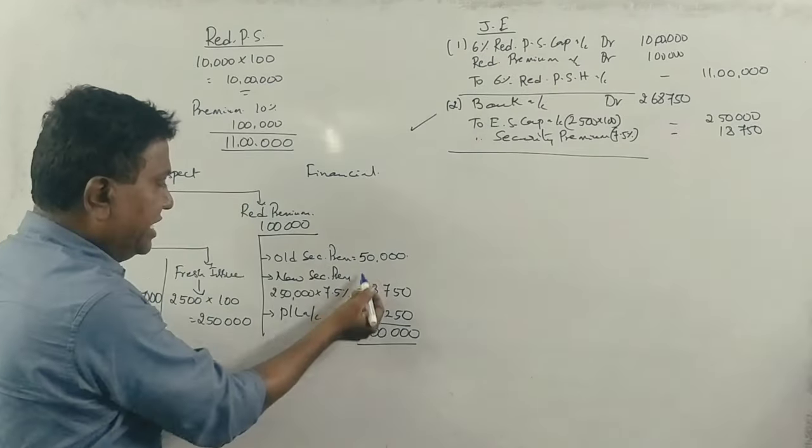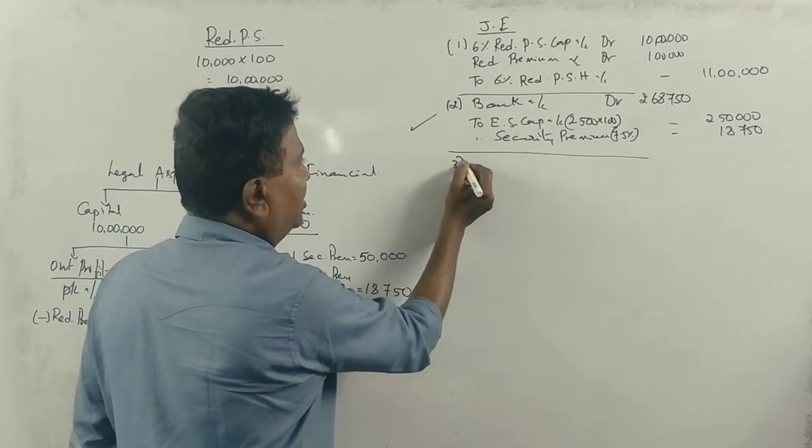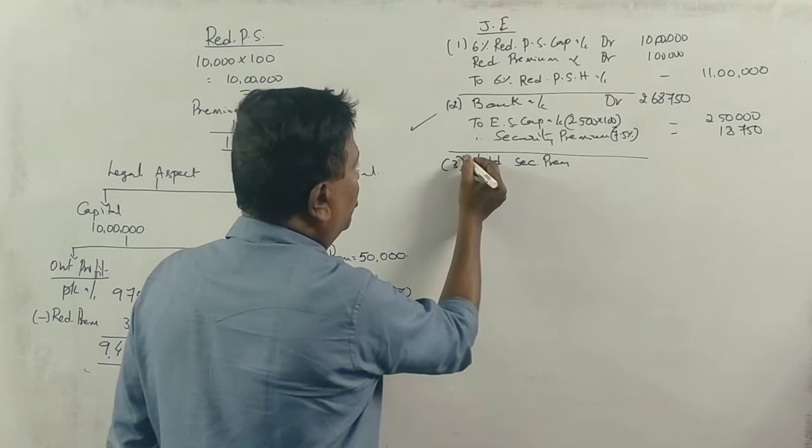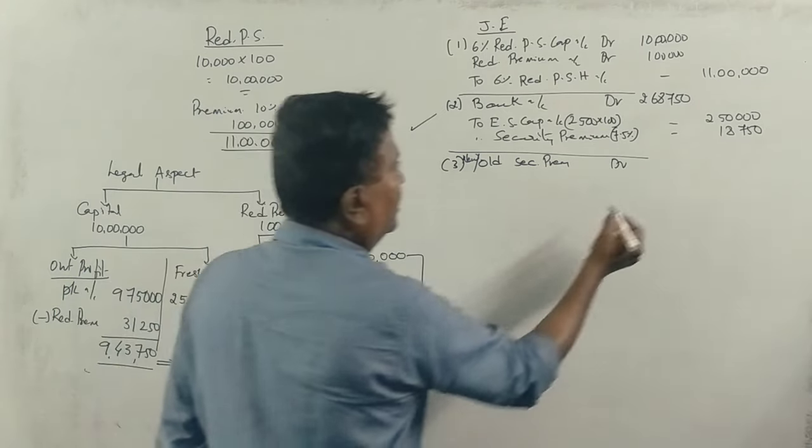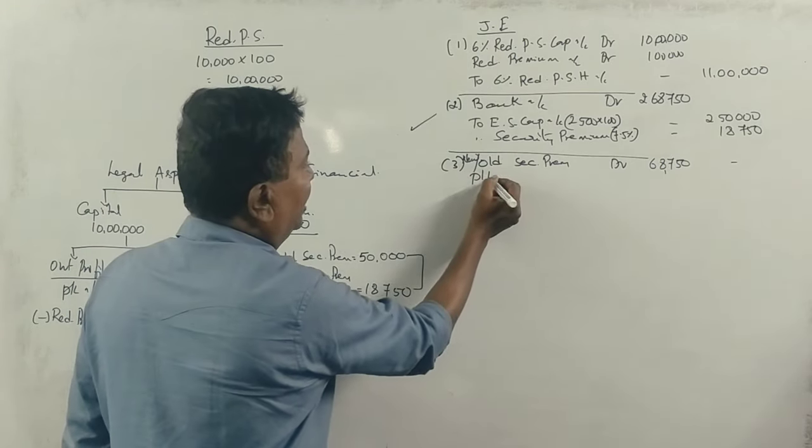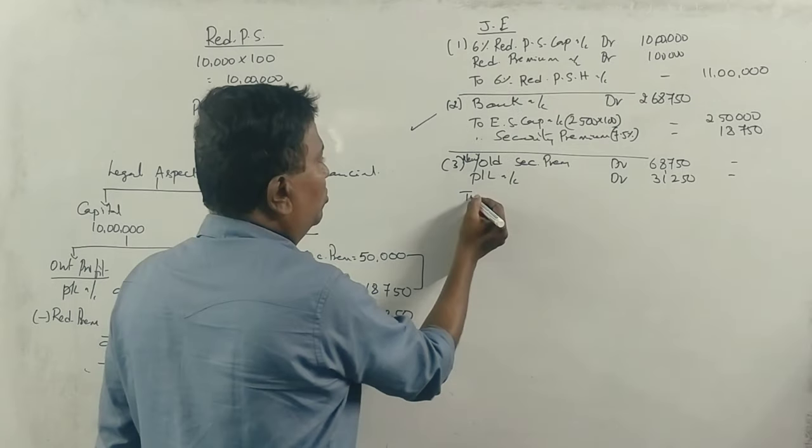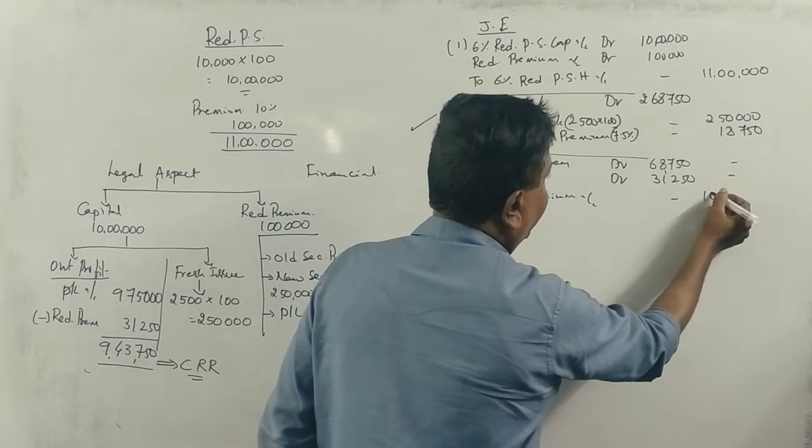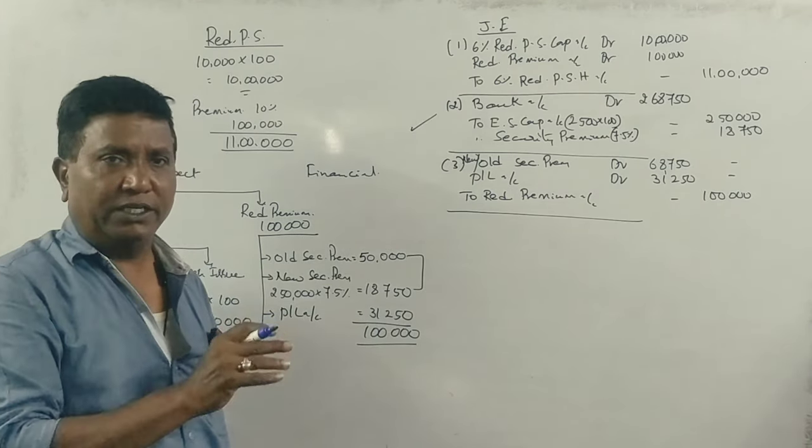The next entry is for the redemption premium adjustment. Old Security Premium Account debit 50,000, New Security Premium Account debit 18,750 (these two total 68,750), Profit and Loss Account debit 31,250, to Redemption Premium Account 1 lakh. Being security premium and profit and loss account transferred to redemption premium.